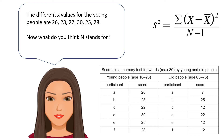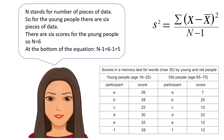What do you think N stands for in the equation? N stands for the number of pieces of data. For the young people, there are six pieces of data, so N equals 6. At the bottom of the equation it says N minus 1, so N minus 1 is 6 minus 1, which equals 5.